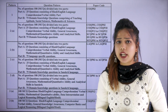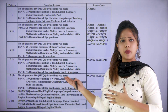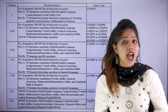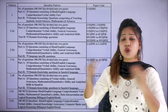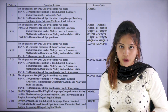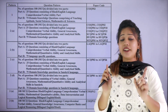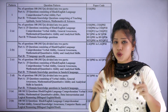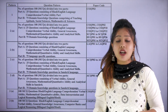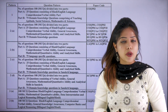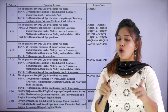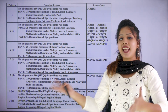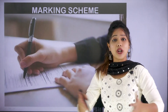You might have a doubt: how many test papers can I select? You have the liberty to choose up to 20 test paper codes, but it is not advisable to choose all 20. Just choose the test paper for the master's program you want to pursue — and that covers the exam patterns.